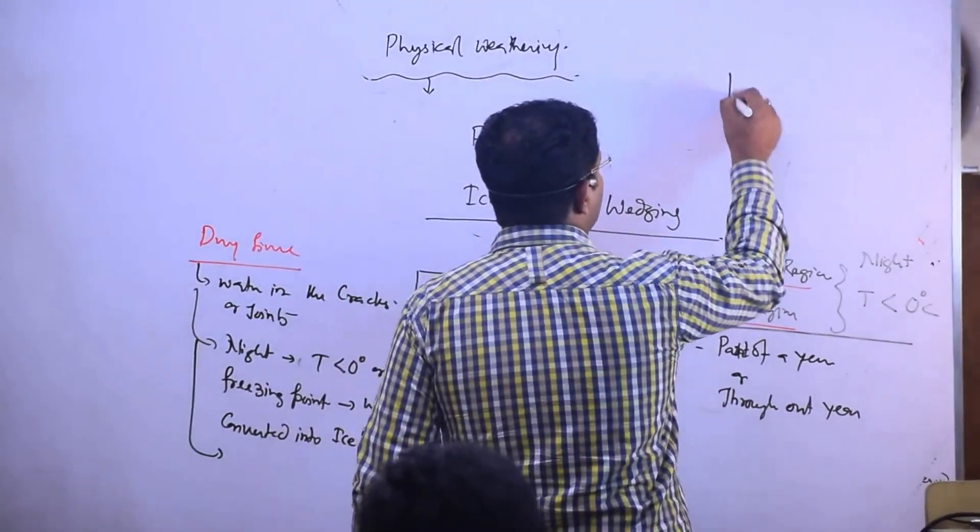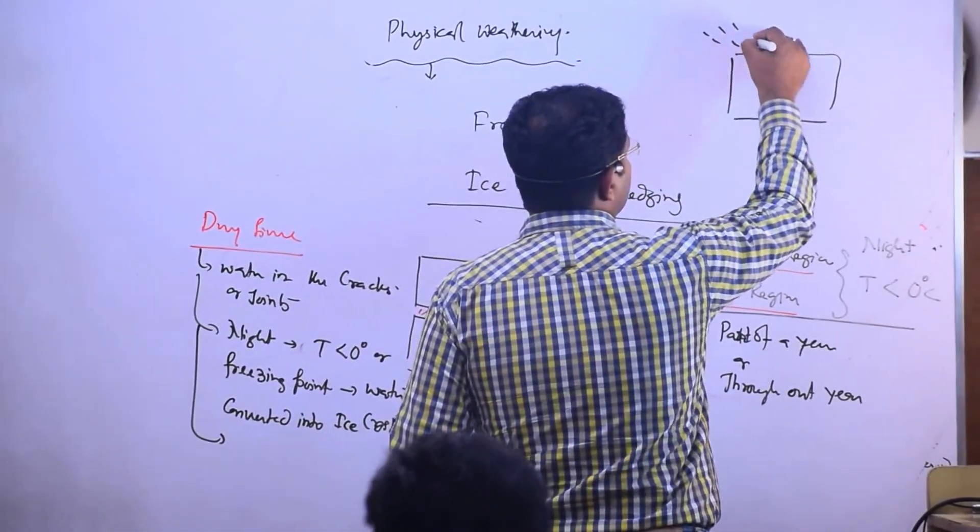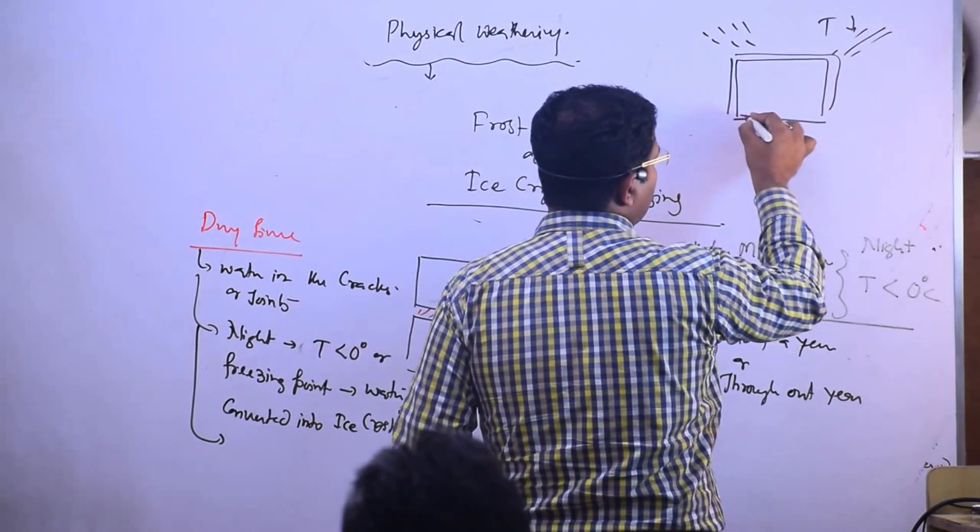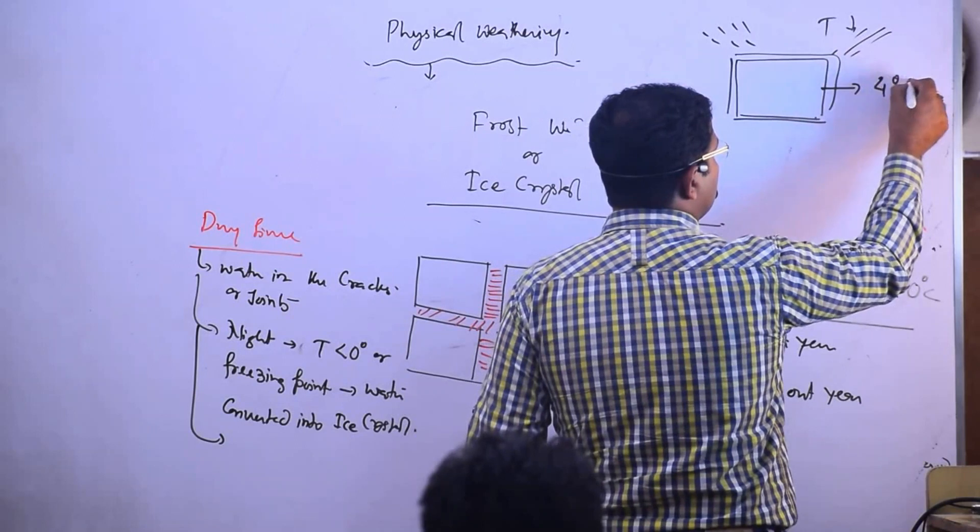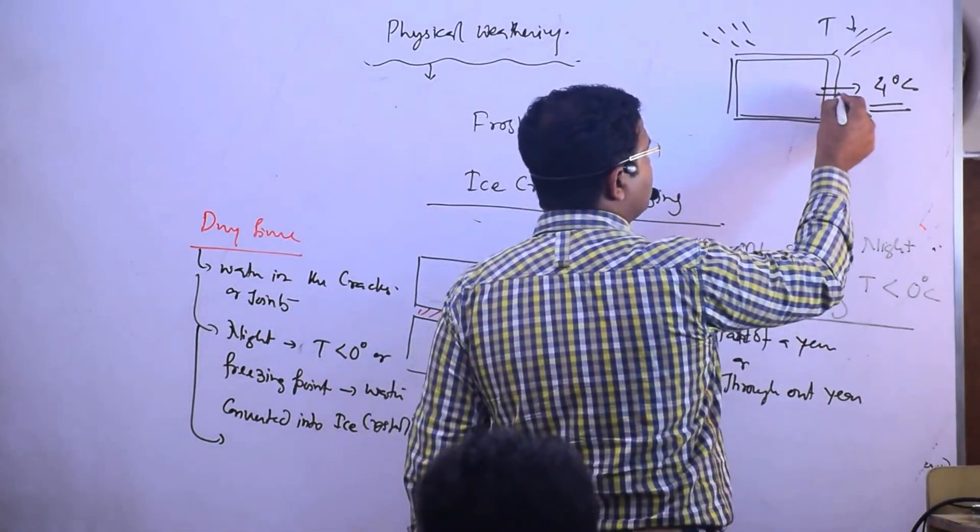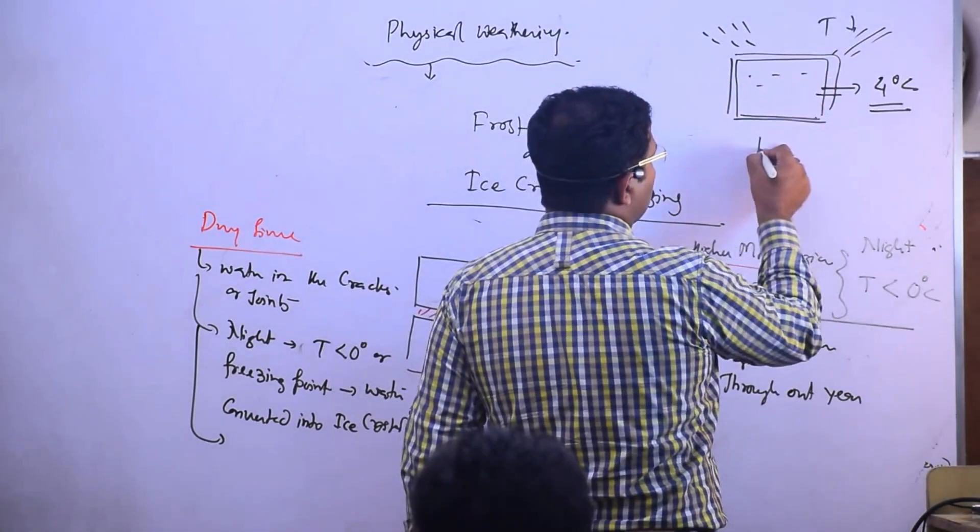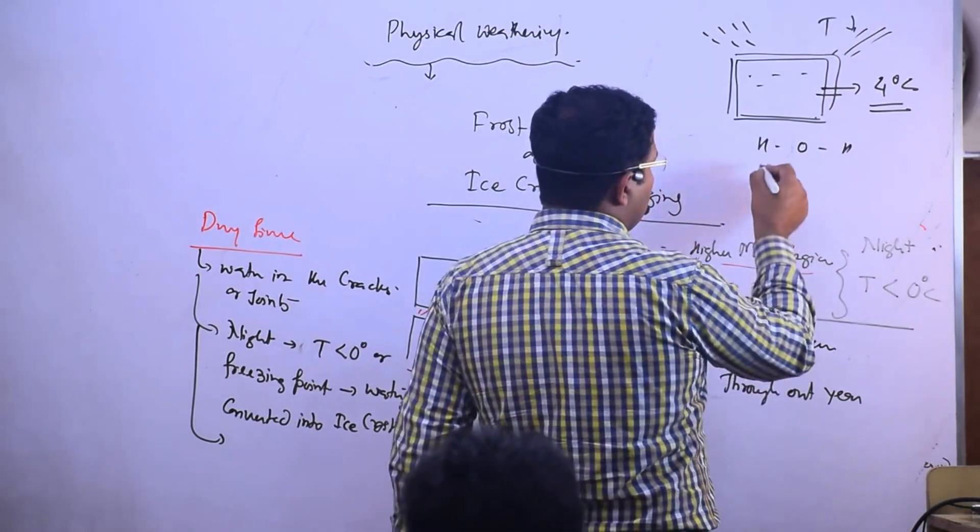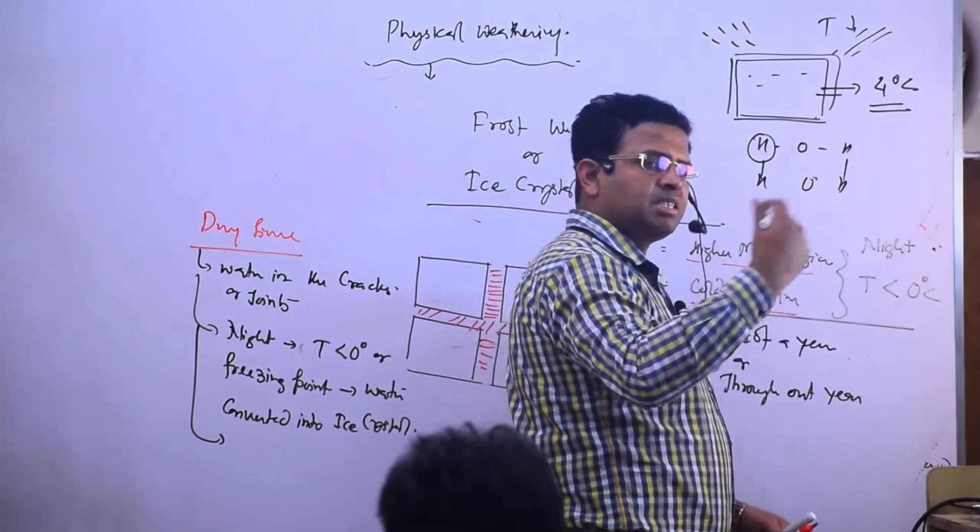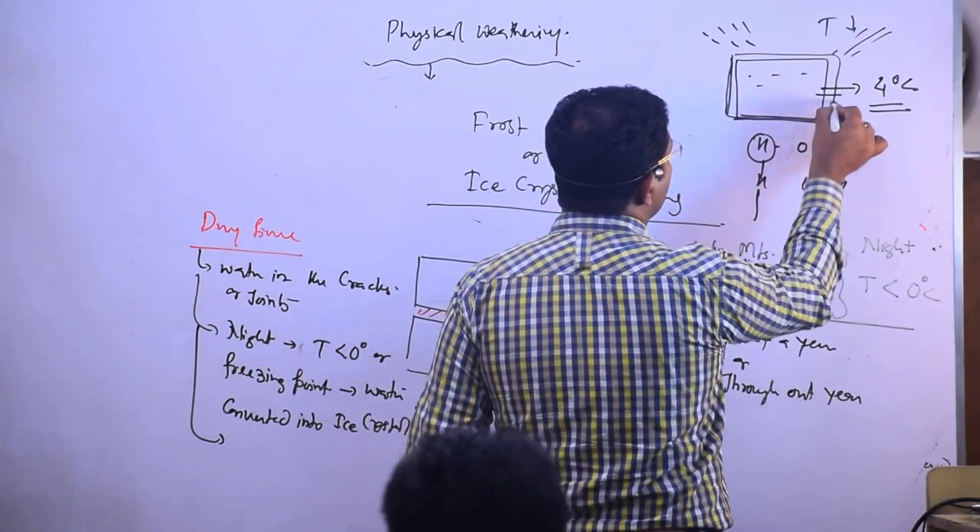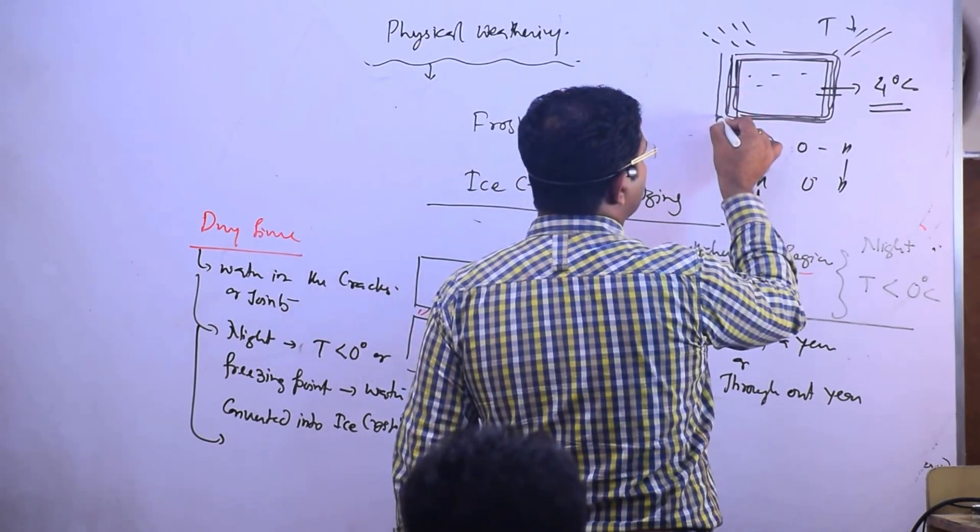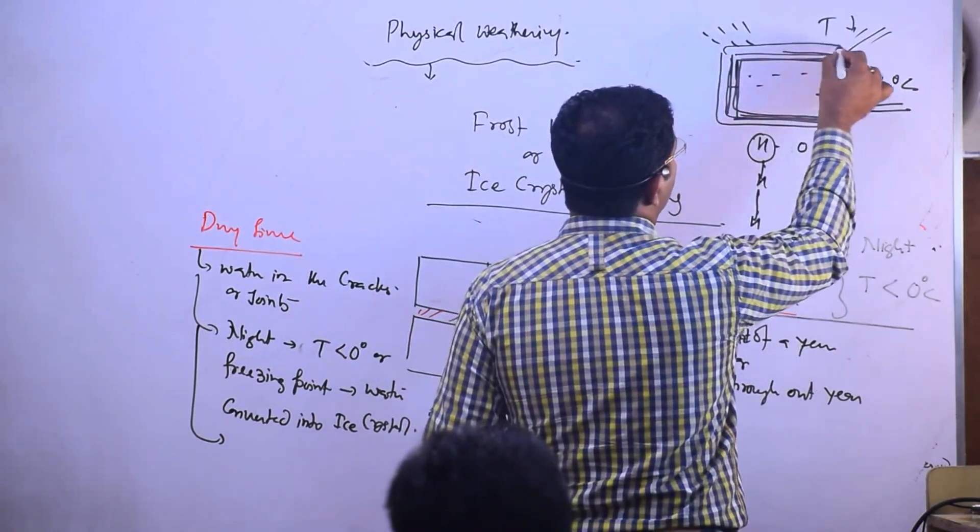When the temperature starts decreasing, this water starts contracting. Water contracts, but it contracts till 4 degree Celsius. After 4 degree Celsius, what happens? H-O-H molecules start making hydrogen bonds, forming ice crystals, and then start expanding. This is the original water volume: till 4 degree Celsius water reduces its volume, but after 4 degree Celsius, as it starts converting into ice crystal, they make hydrogen bonds and their volume increases more than normal.